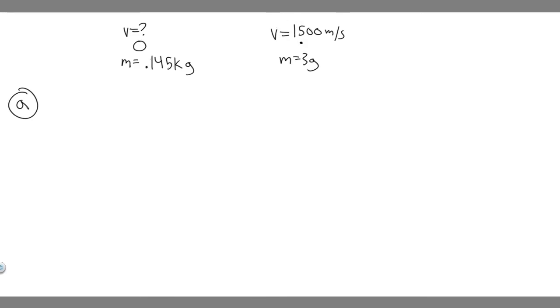For Part A, what we're trying to do is find the baseball speed if the pitcher's claim is valid. He's saying the momentum is the same. So in order to solve this, you need to know what momentum is. We denote momentum with P, and momentum is equal to mass times velocity.